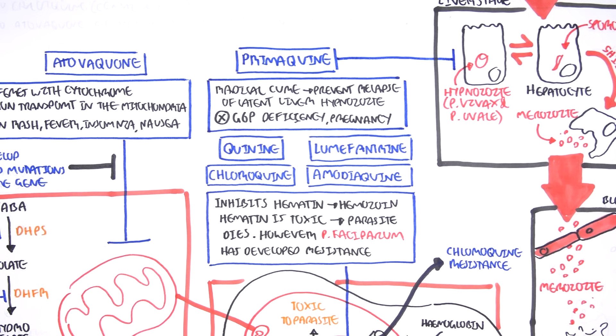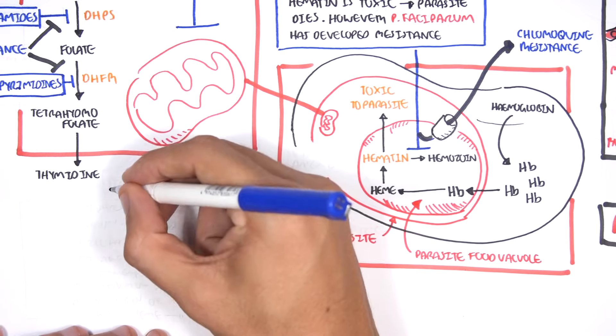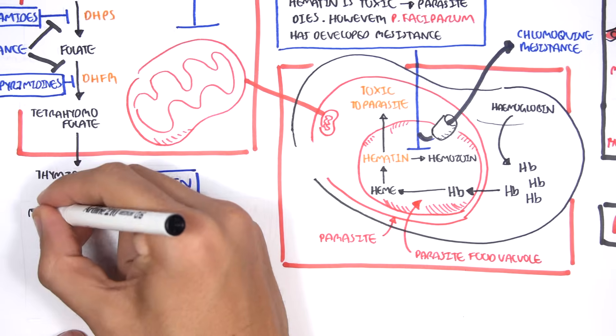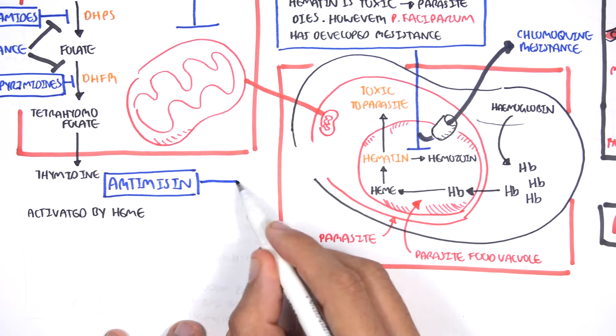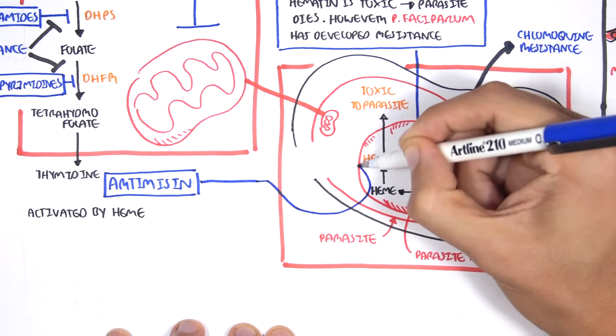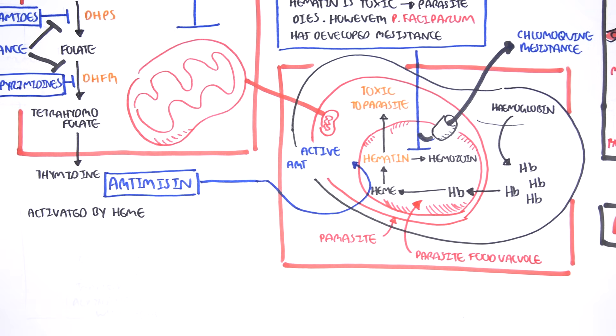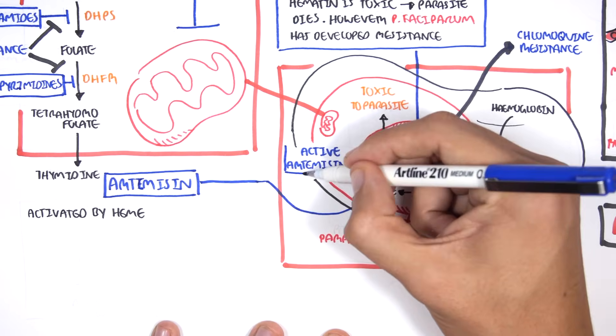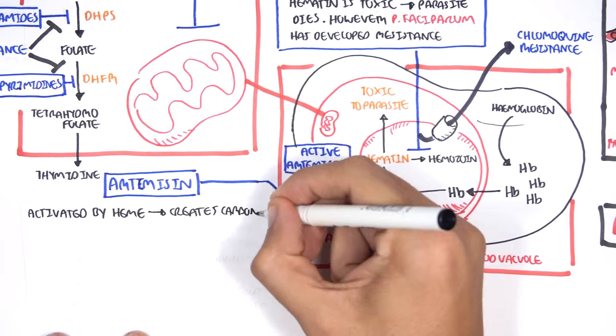The next antimalarial drug we will look at, and it's a very important one, are known as artemisinins. These are essentially inactive when they're given. And when they're given to people, they are activated by ferrous heme, or free heme. When activated by the heme, the artemisinins create a carbon-centered radical, which will essentially kill the parasite.